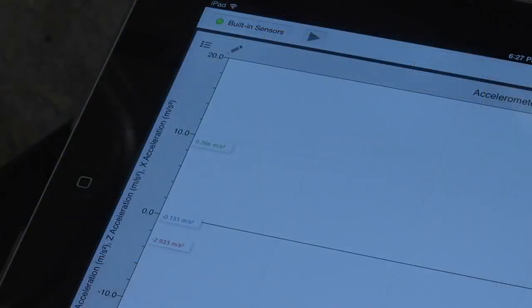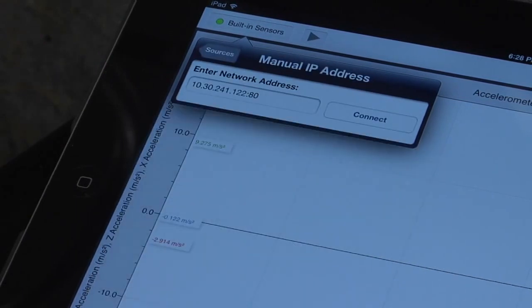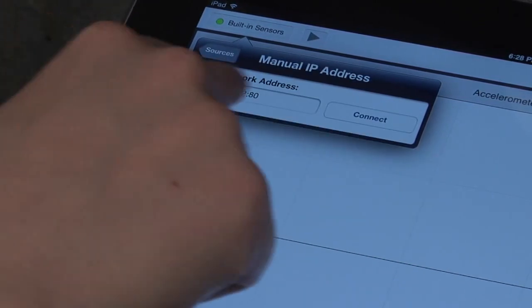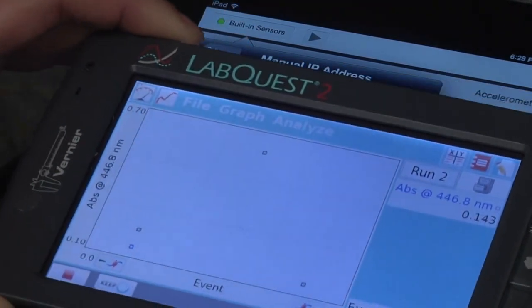To connect to the iPad, we're going to click this little dot over here and then we're going to say specify source, and we need to enter in the WiFi IP address, which we will find on the LabQuest.